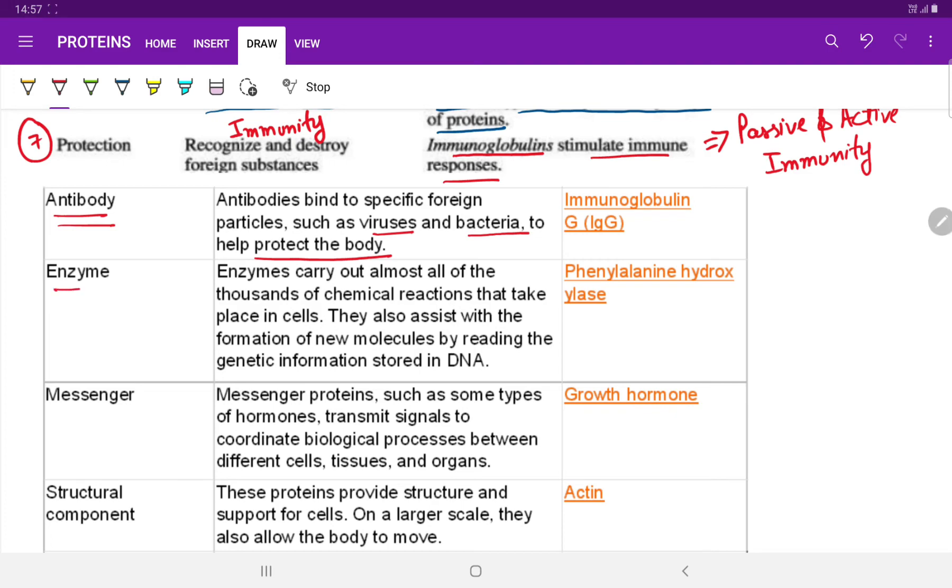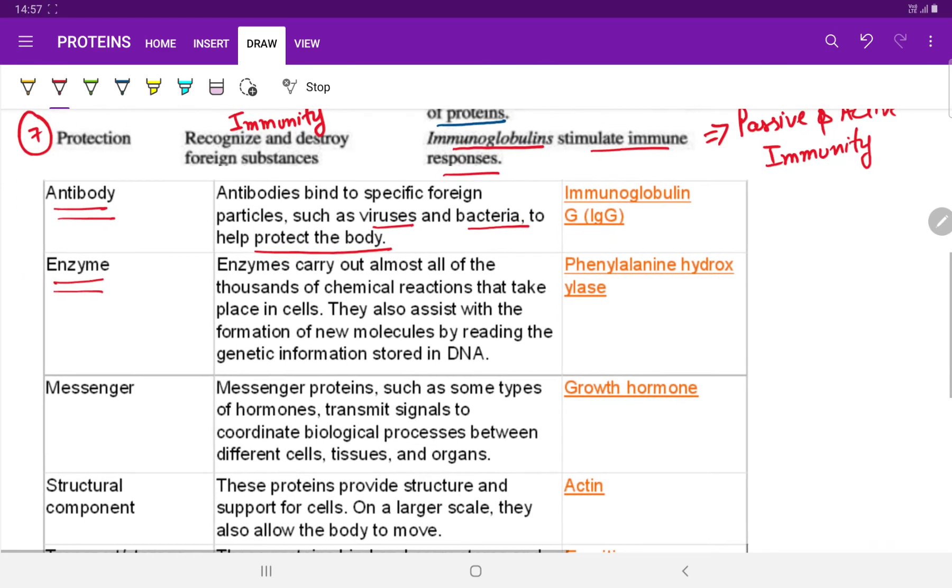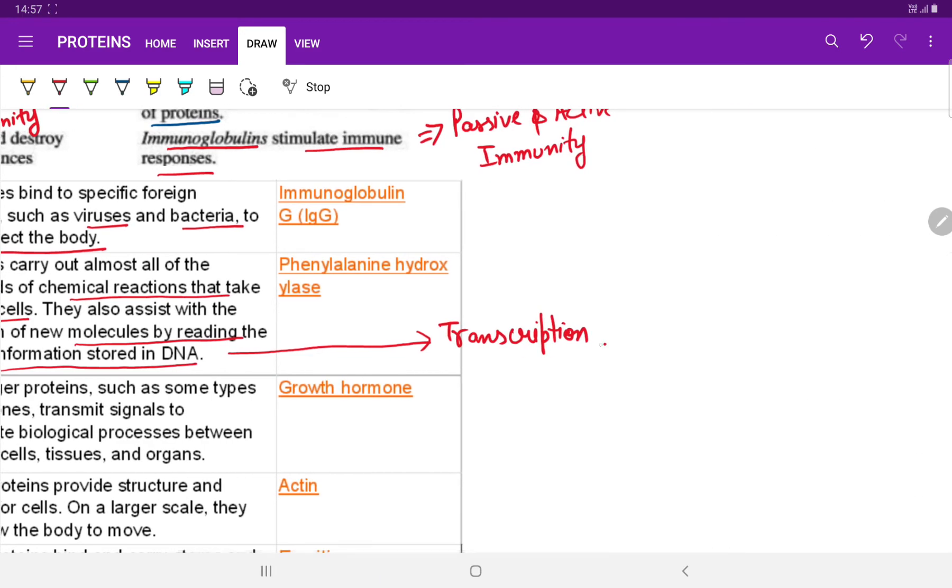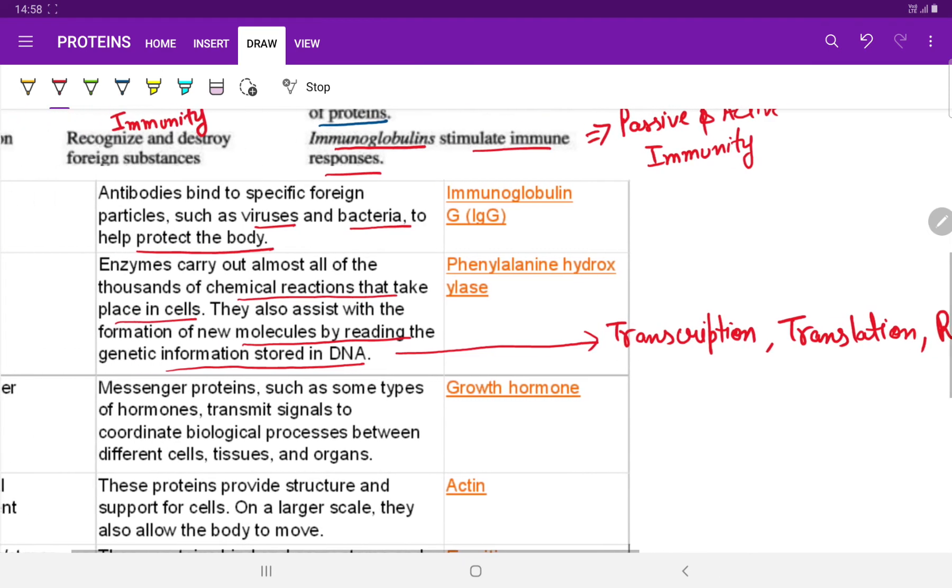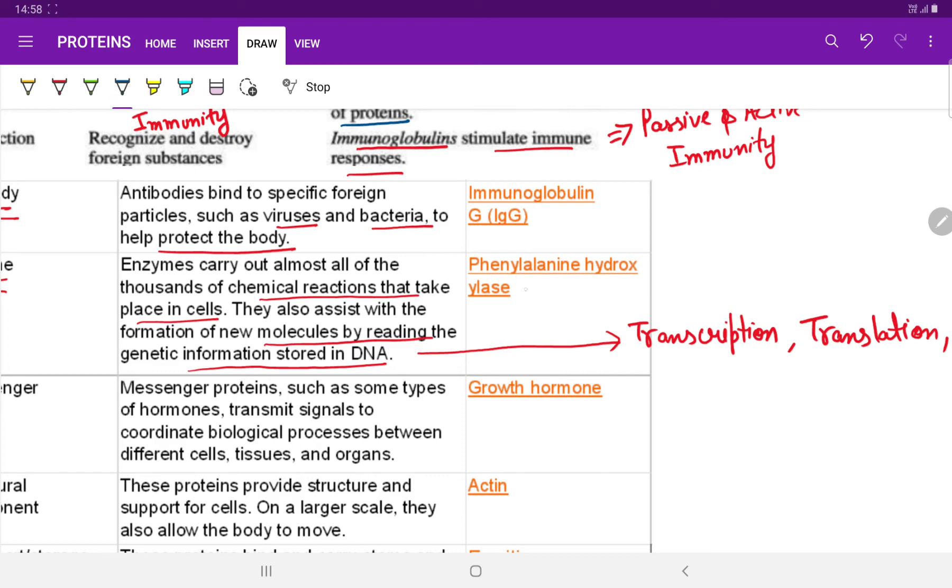The next one is enzymes. We had already discussed about enzymes. Now let us understand something in detail about them. Enzymes carry out almost all of the thousands of chemical reactions that take place in the cells. They also assist with the formation of new molecules by reading the genetic information stored in the DNA. We are all familiar with the terms of transcription and translation, also replication. These are involved in the genetics. The enzyme involved is phenylalanine hydroxylase.